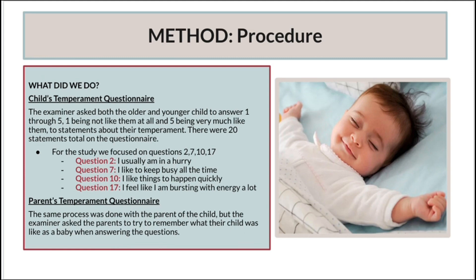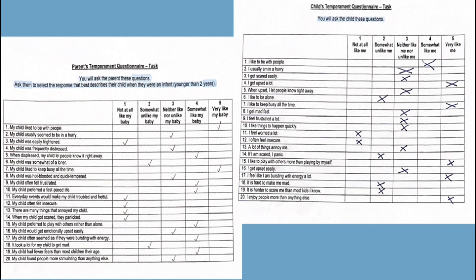For the parent temperament questionnaire, it was the same process with the same questions, but the examiner asked the parents to try to remember what their child was like as a baby when answering the questions, so we could see if the child remains consistent as they age. The questions are the same, just a little different in wording — for the parent it is 'my child likes to,' and for the child it is 'I like to.' The wording is also simpler on the child's questionnaire compared to the parent's, because parents are able to answer more detailed questions. Overall, these questionnaires are meant to be simple so that the examiner can ask the questions with ease and subjects can answer them, with hopefully no room for error.